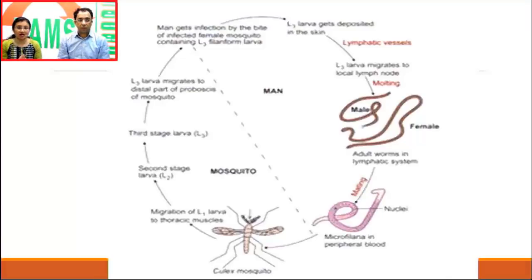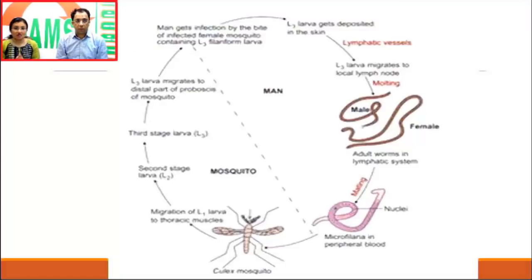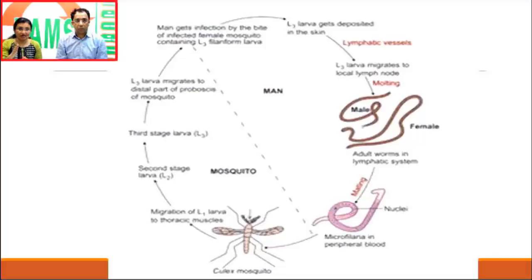In India, 95% of cases of filariasis are attributed to Wuchereria bancrofti and 5% to Brugia malayi. This patient presented with scrotal swelling, and it is very important to remember that scrotal involvement is very uncommon in Brugia malayi but very common in Wuchereria bancrofti. All tissue nematodes are viviparous — larvae-laying. Infection requires the bite of a vector; in Wuchereria bancrofti that vector is Culex fatigans.